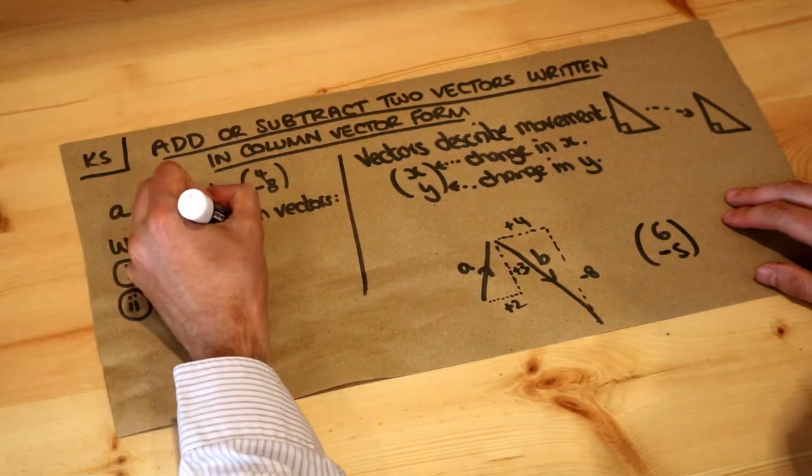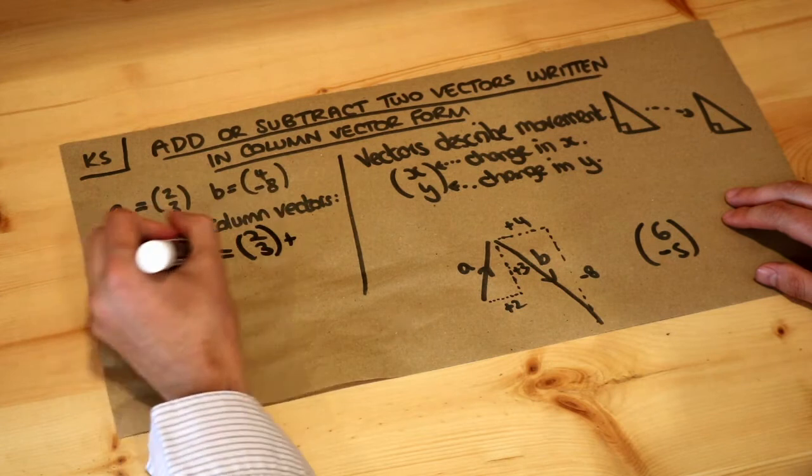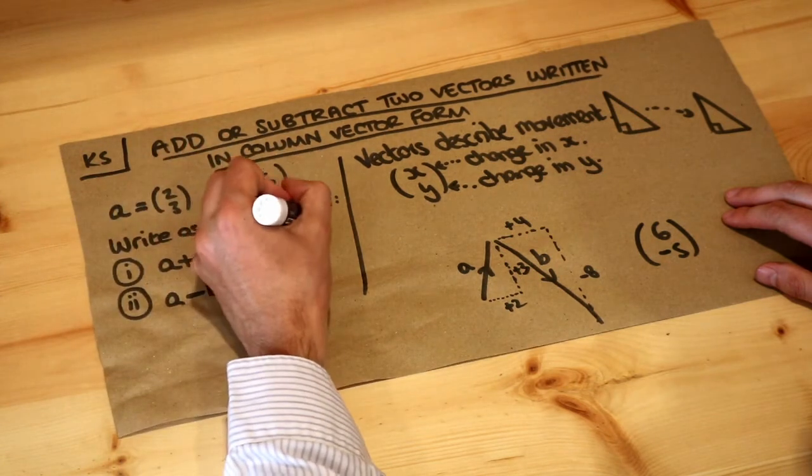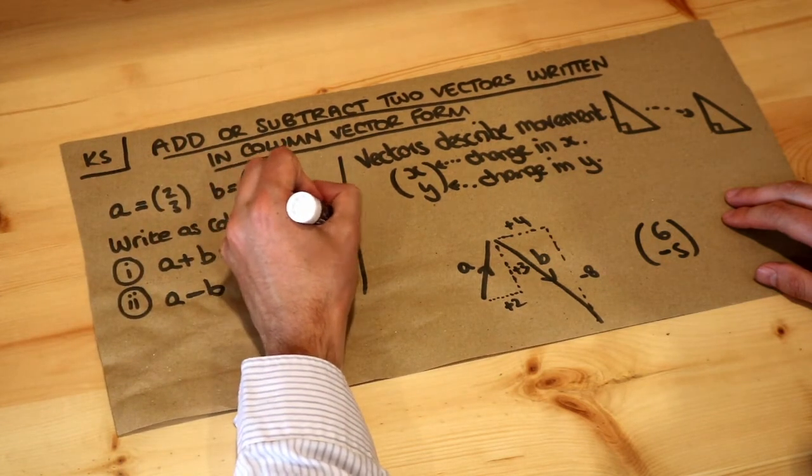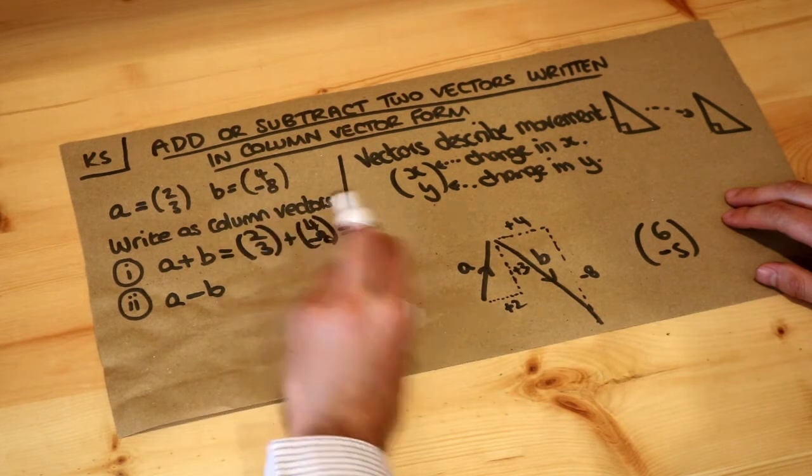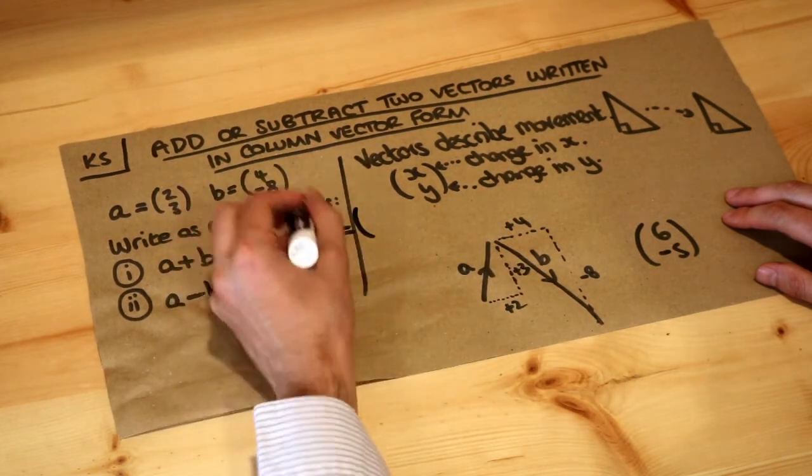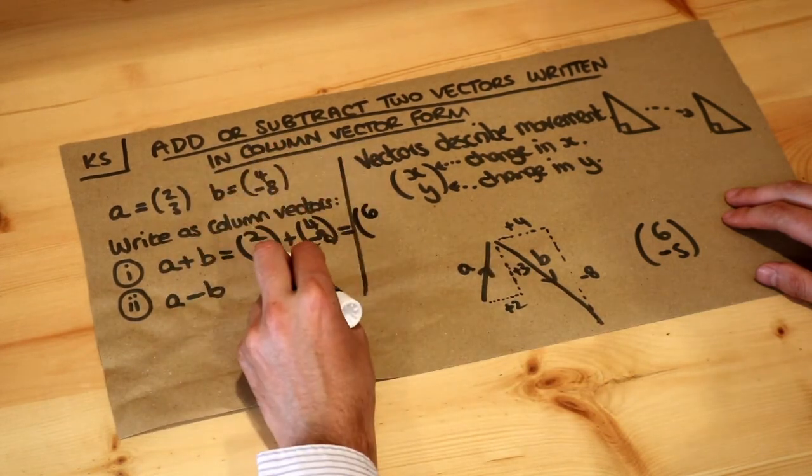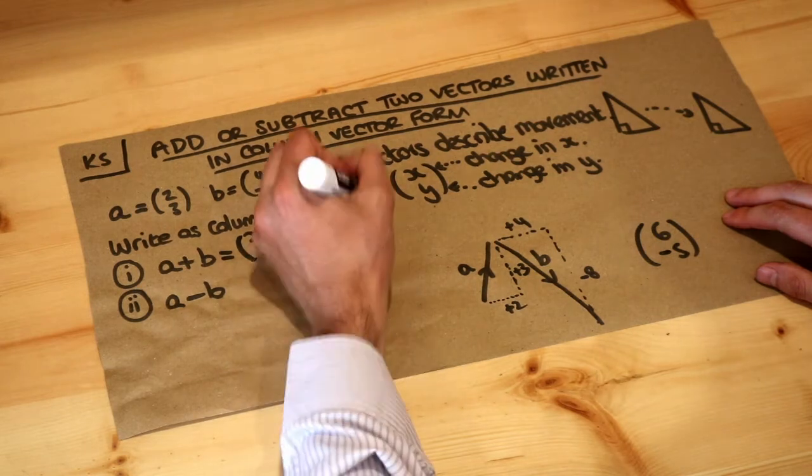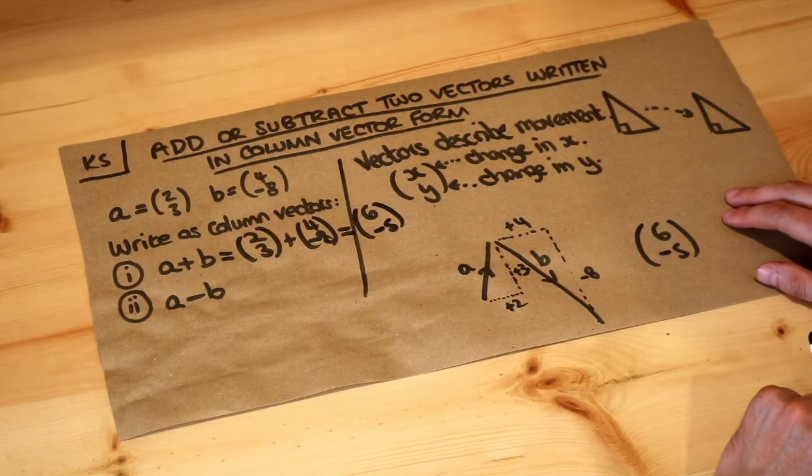The easy way to do this: if I write my vectors (2, 3) and then I'm adding b which is (4, -8), it's just simply a case of adding the top numbers, the x values, so 2 plus 4 is 6, and adding the y values: 3 plus -8 is -5. And that's exactly what we've got over here.